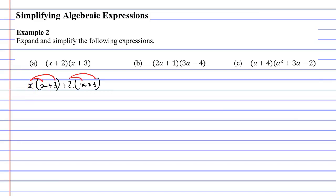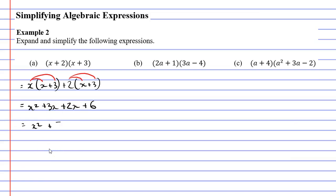x times x gives us x squared, and then x times 3 is 3x, so we write plus 3x. Then positive 2 times x is 2x, so plus 2x, and positive 2 times positive 3 is 6, so plus 6. To simplify, only the two middle terms combine: 3x plus 2x is 5x, giving us x squared plus 5x plus 6.